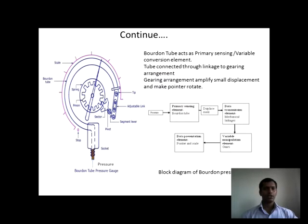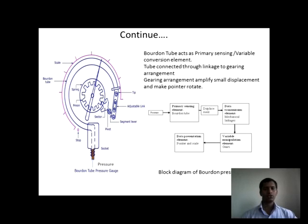We can see one example: the Bourdon tube pressure gauge. We can measure pressure with the help of a Bourdon tube pressure gauge by applying pressure to its lower end. When we apply pressure to its lower end, the tube will expand and give you a reading on the scale. The block diagram of the Bourdon tube consists of a parameter sensing element, displacement element, data transmission element, data presentation element, and data variable manipulation element. First, pressure is applied to the lower end; the sensing element gives displacement in the form of expansion. The data transmission element is the mechanical linkage; the data manipulation element is the gear used to rotate; and the data presentation element is the pointer and scale.